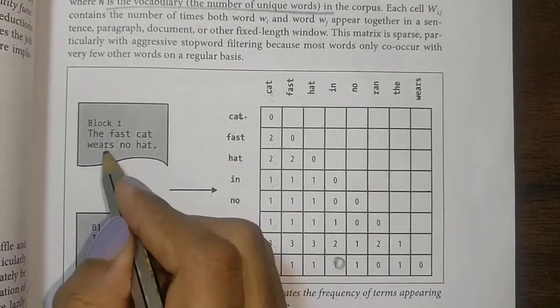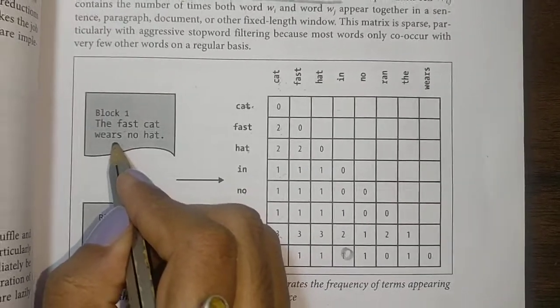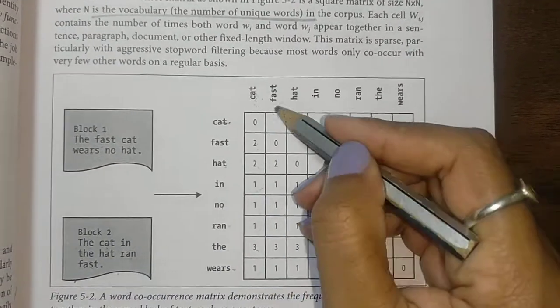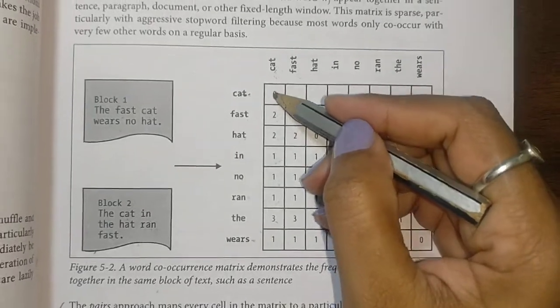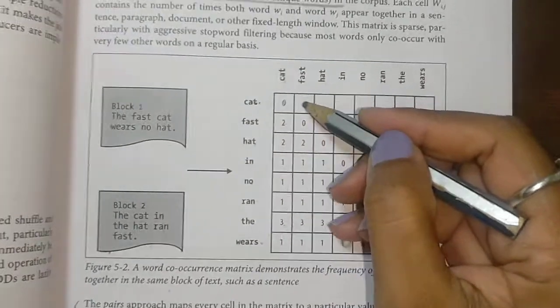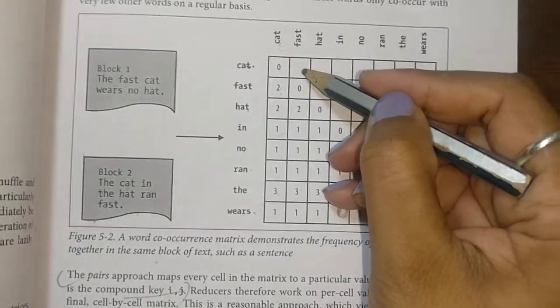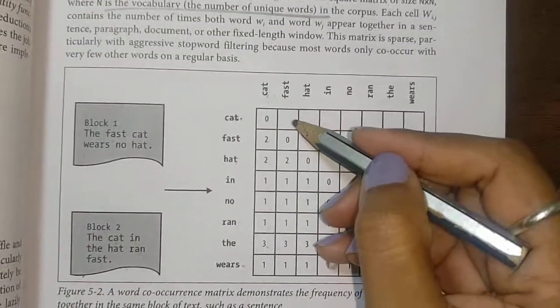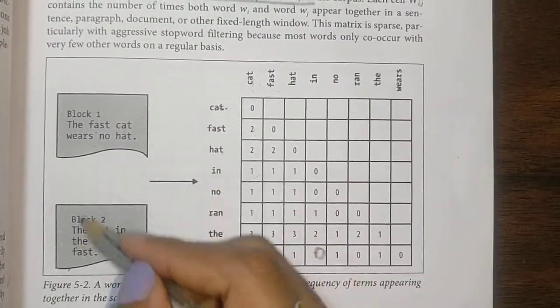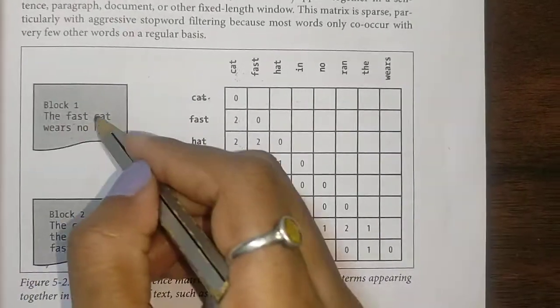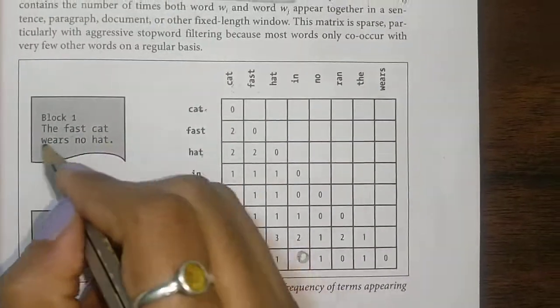Moving on to fast. Fast and cat was already done, so we are not going to look at it again. Next, fast and fast: fast is only there once in the same sentence.